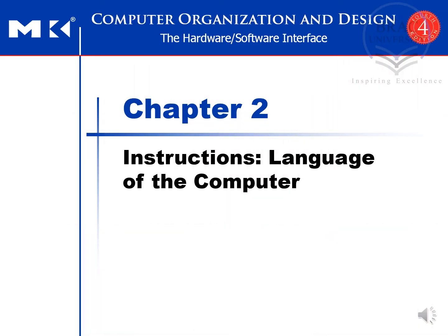In this section we are going to start Chapter 2, which is about instructions — the language of the computer. In this chapter we are going to see how we can translate high-level code into assembly instructions, and then translate that assembly code into machine instructions that our hardware can understand.